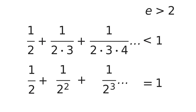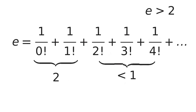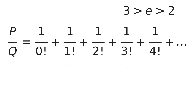Given that e is 2 plus a number less than 1, e is between 2 and 3 — i.e., it's not itself an integer. Now, if e is rational, then we can express it as a ratio in lowest terms between two integers, p and q.